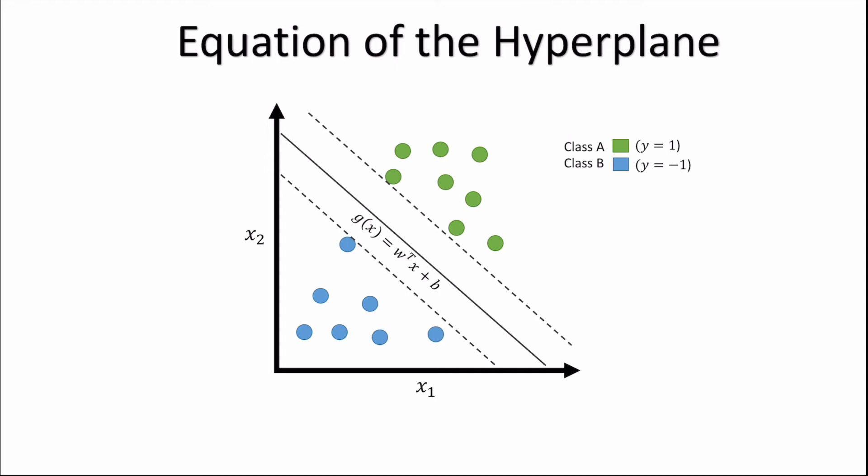The formula g of x equals w transpose x plus b. So here, w is a vector of weights or parameters, and b is our bias, and we have x as our input vector. So with two features, x1 and x2, our hyperplane would have the following formula: w1 x1 plus w2 x2 plus b.